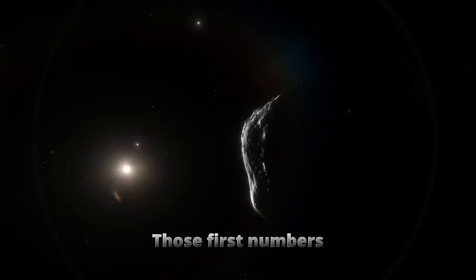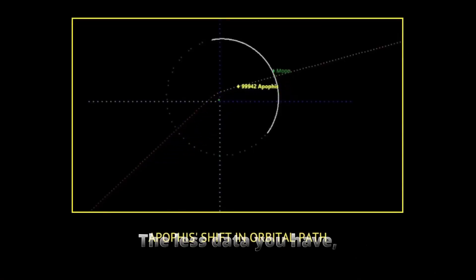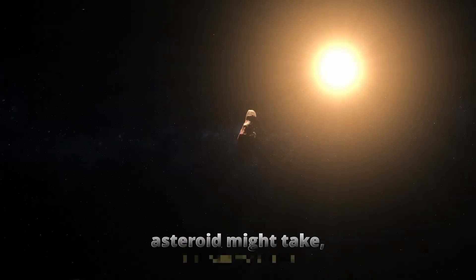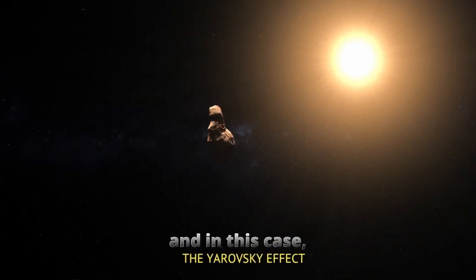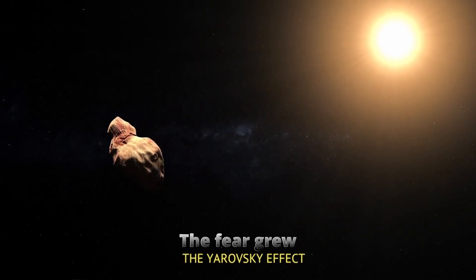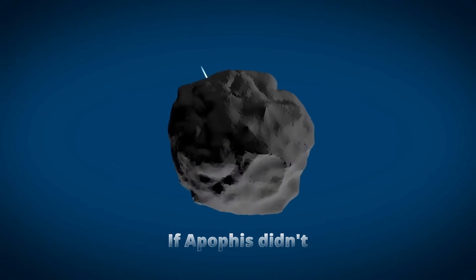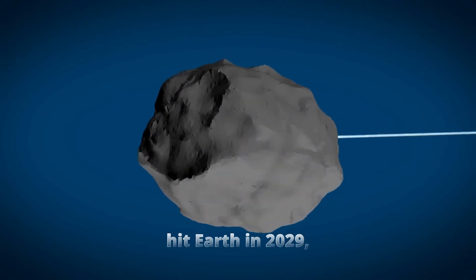Those first numbers came from only a few nights of observations. The less data you have, the wider the range of possible paths an asteroid might take. And in this case, one of those paths passed straight through our planet. The fear grew when scientists noticed something in the math. If Apophis didn't hit Earth in 2029, it might still pass through what's called a gravitational keyhole.